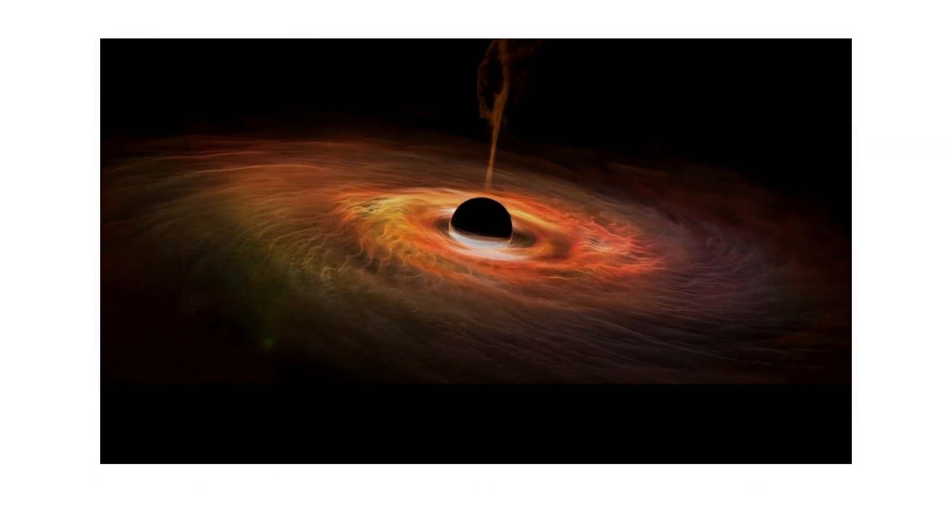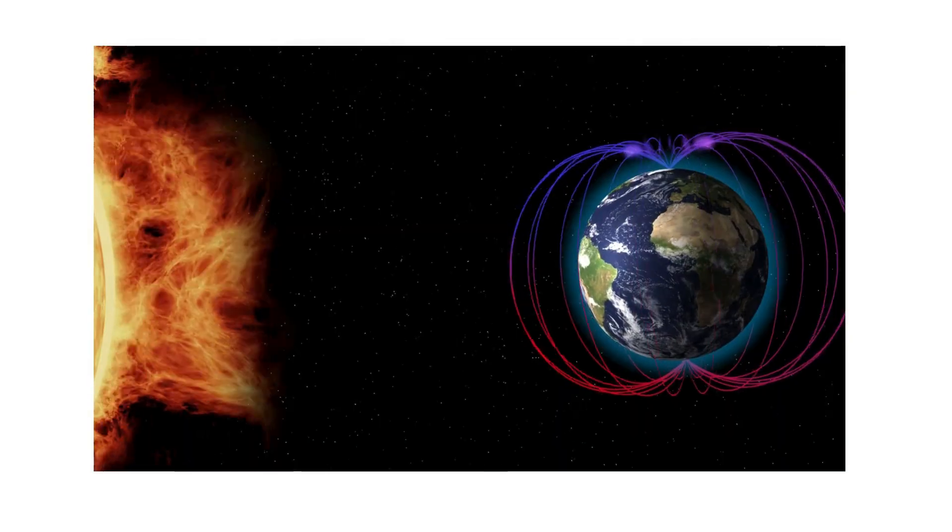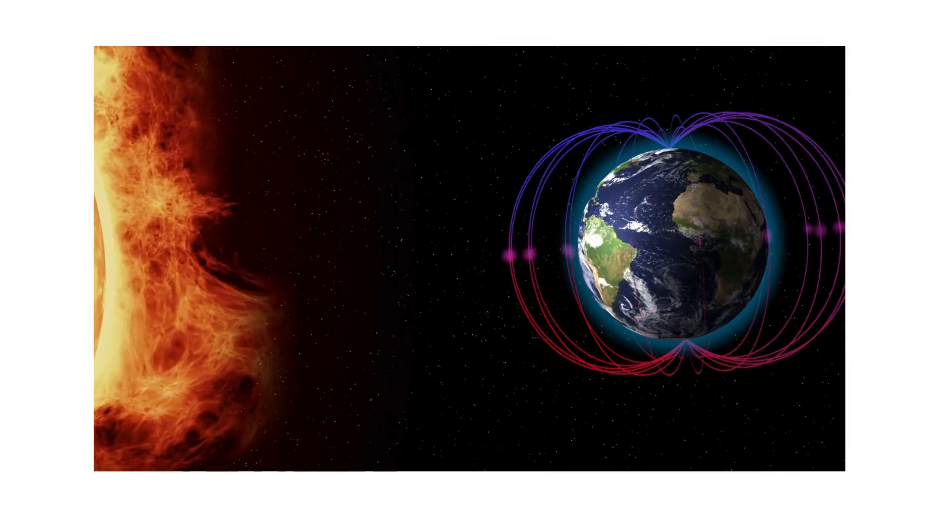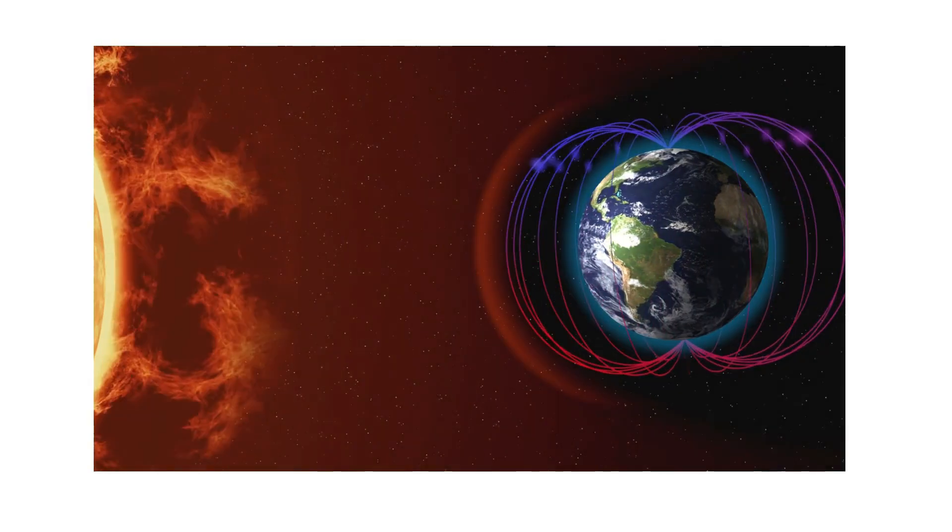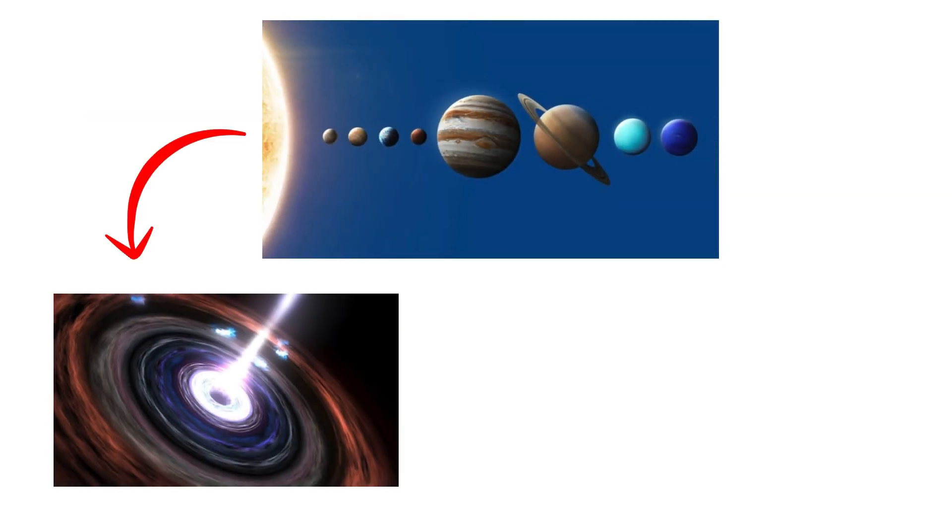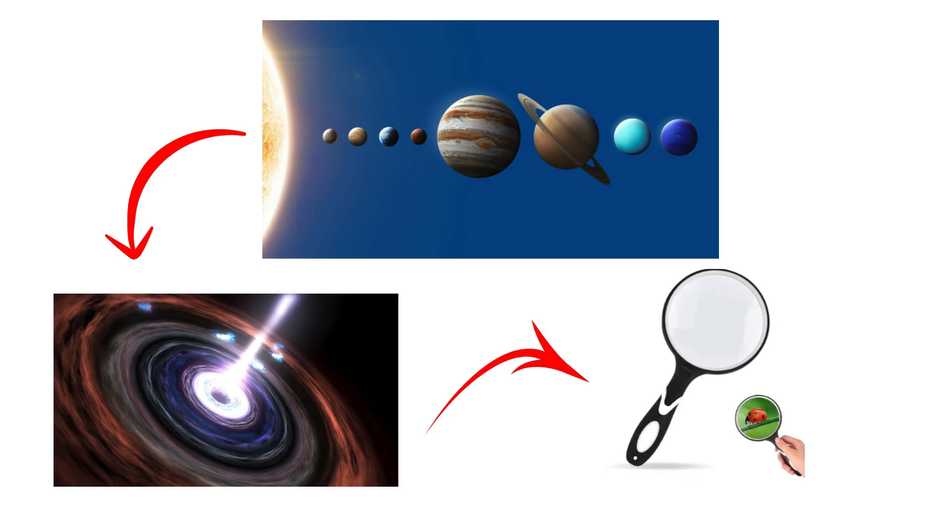Jets make these active black holes even deadlier. Magnetic fields around the accretion disk channel part of the inflowing matter into narrow, relativistic outflows. When these jets are aligned with our line of sight, the black hole appears as a blazar, magnifying the observed brightness.